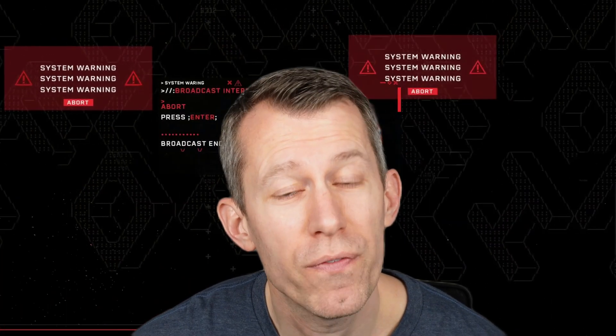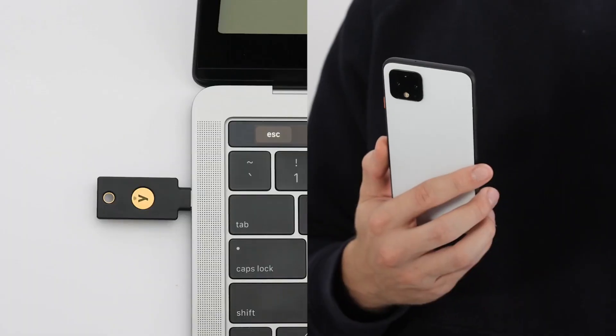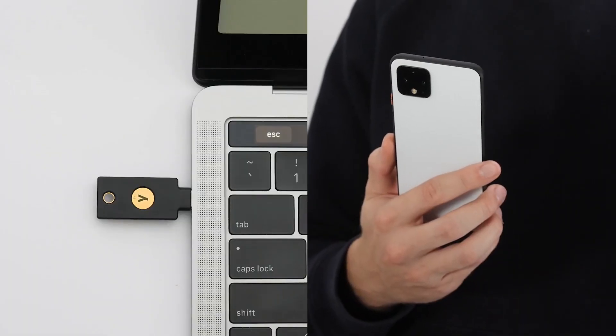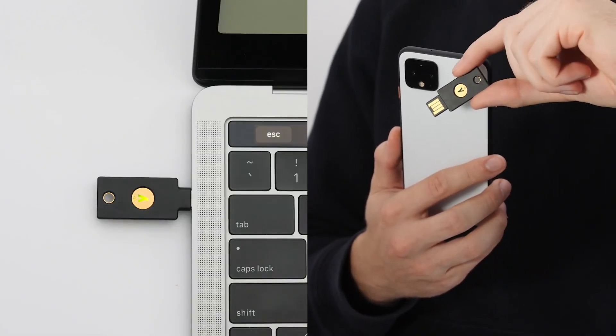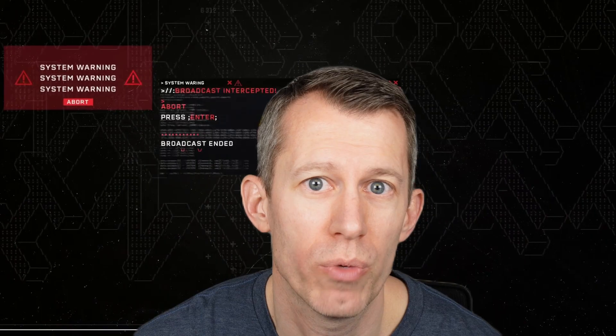Now this sounds bad, but there are a few ways you can actually protect yourself. Let's talk about two of them. The first method is a YubiKey — a physical device that you actually plug in to your computer or use an NFC reader to read from your phone.